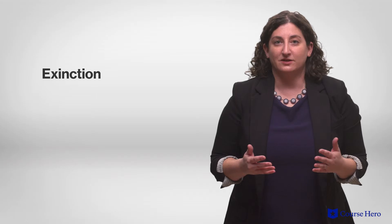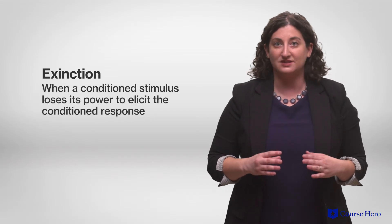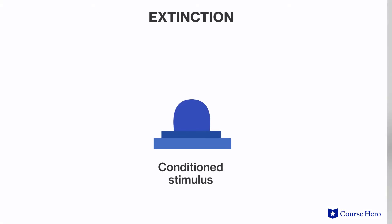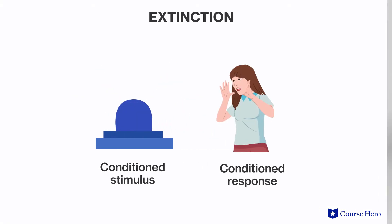If the conditioned stimulus is presented alone repeatedly without the unconditioned stimulus, this will result in extinction, when the conditioned stimulus loses the power to elicit the conditioned response. But sometimes after the association has been extinguished, it spontaneously reoccurs. If a person does not see a flashing blue light for a period of time, they may flinch when they see it again. This happens because the original learned association between the light and the firecracker never fully disappears.